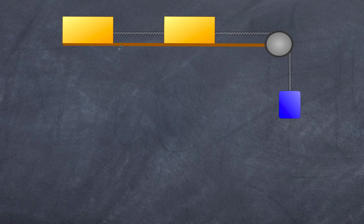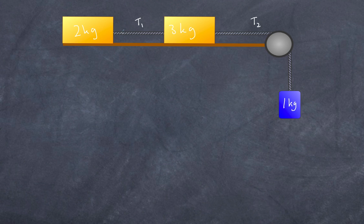Now we step up the problem. I have a 2 kg mass, a 3 kg mass, and a 1 kg mass. I want to know what the tensions in these ropes are — we now have two tensions, T1 and T2. Labeling all the forces: T1 acts on the 2 kg mass, T1 and T2 act on the 3 kg mass, T2 acts upward on the 1 kg mass, and 1g acts downward. We're ignoring friction here and will deal with friction shortly.